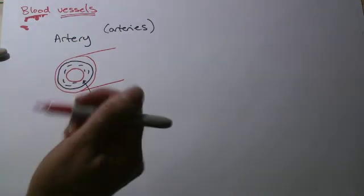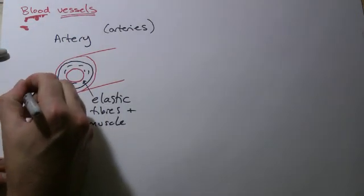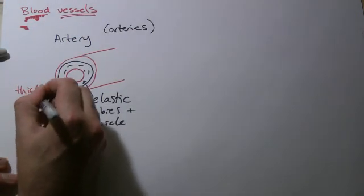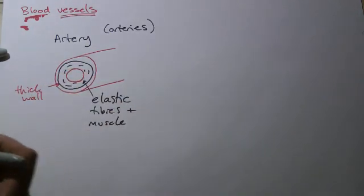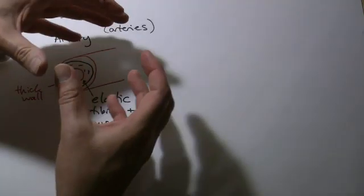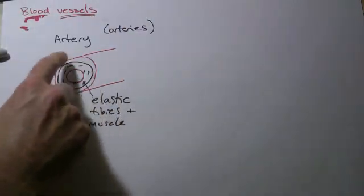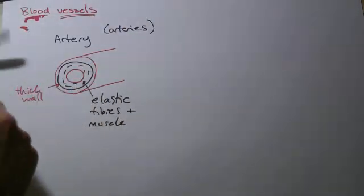The outside wall, as we'd call it, is nice and thick as well. Thick outside wall. And that's because the pressure that's in these arteries is actually very high and you don't want them to pop and burst. So a nice thick wall on the outside stops it going.